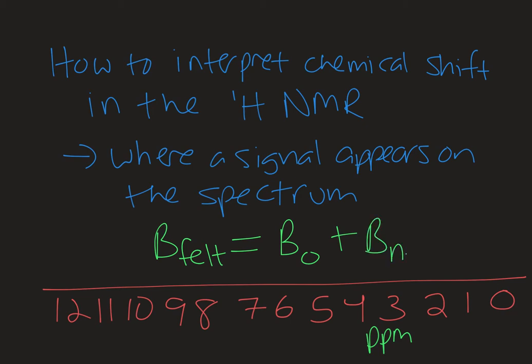The neighboring atoms can either add to or subtract from the applied magnetic field, and those small differences in chemical environments make for a difference in chemical shift. That's handy for us because that separates our signals out from one another and allows us to interpret them more easily.